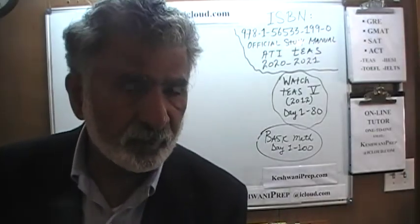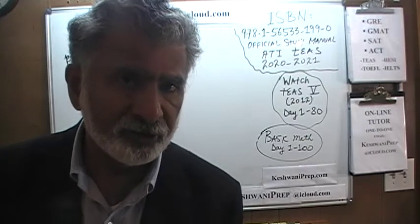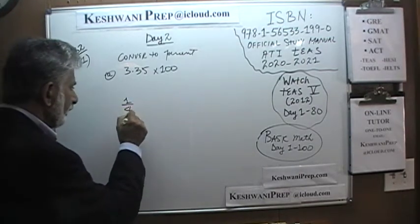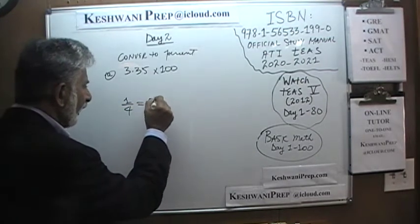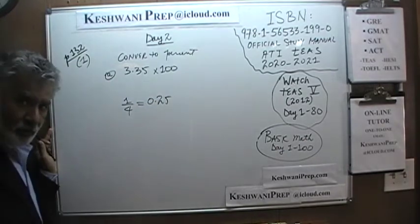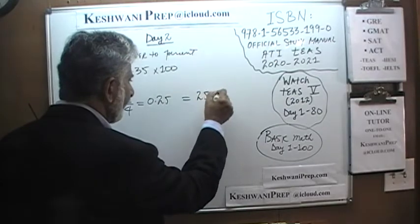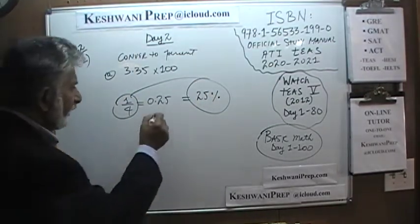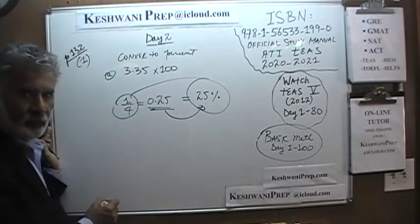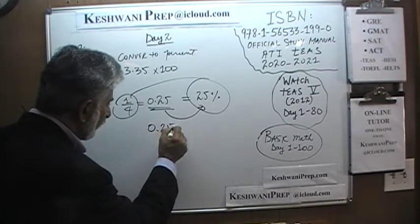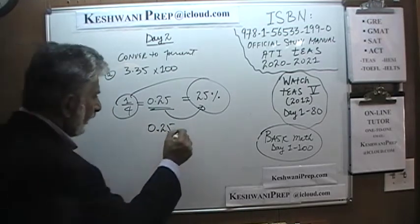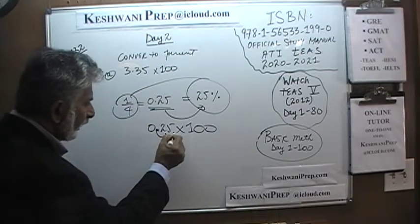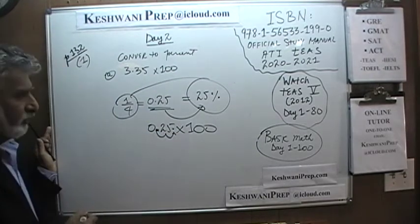It is very easy to remember how to convert a given number into percentage. Think of something you already know. For example, we all know that one quarter is 0.25, and we also know that it is equal to 25%. So if it is given in decimal form, how do we go to percentage form? You take that quantity, multiply it by 100, pick up the decimal point and move it two spots to the right, and it becomes 25. It becomes 25%.